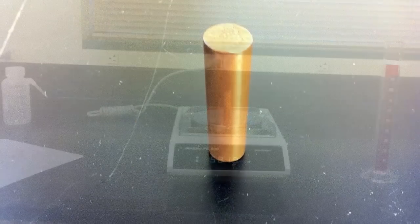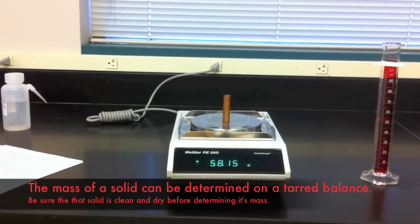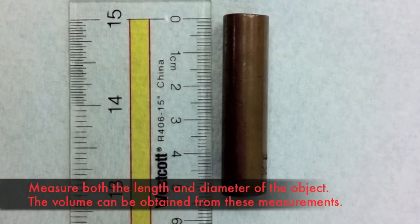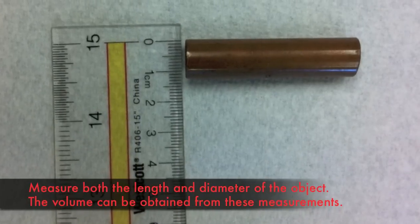Finally you'll determine the density of a solid. The mass of the solid can be measured on a balance. Determining the volume of a solid is significantly more challenging. One approach is to attempt to measure it using a ruler.